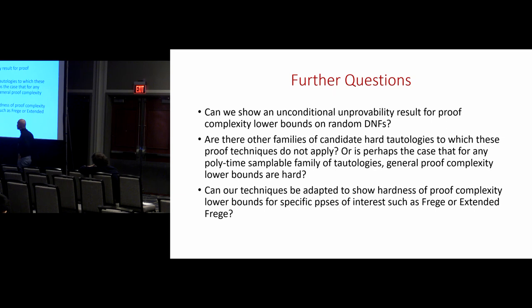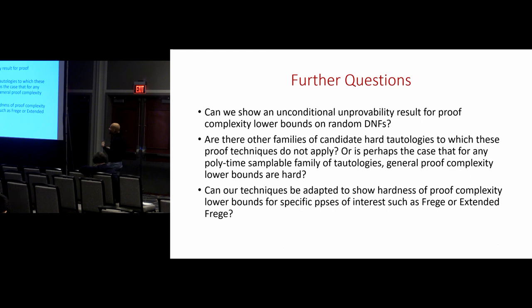Some open questions: Can you show non-provability unconditionally also for random DNFs, rather than just for circuit lower bound tautologies? Are there other families of candidate hard tautologies to which these proof techniques don't apply? I'm tempted to conjecture that for any polynomial-time samplable family of tautologies, proving proof complexity lower bounds is going to be hard. And most importantly, can our techniques be adapted to show that proof complexity lower bounds are hard for specific propositional proof systems of interest, such as Frege or extended Frege?